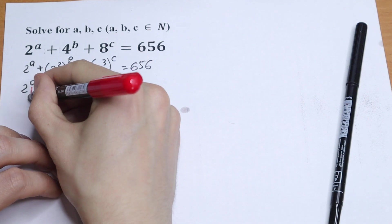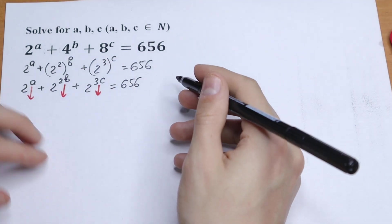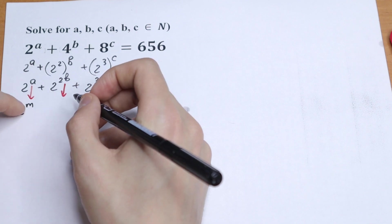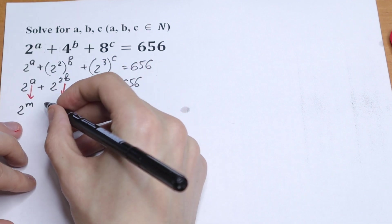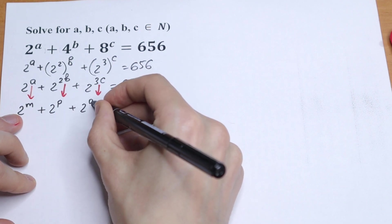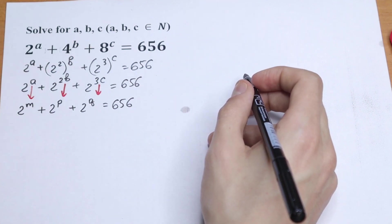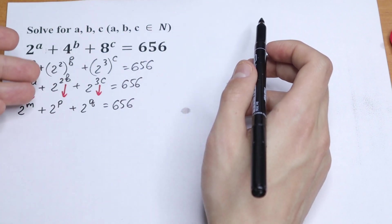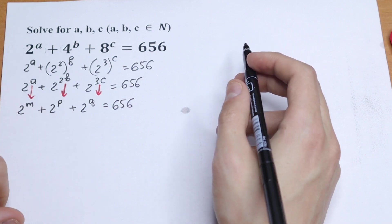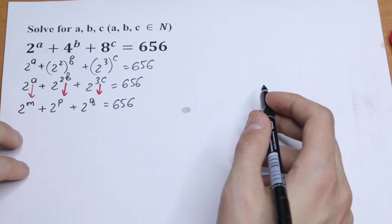Let's use a substitution. Let's say the powers are m, p, and q — so 2 to the power m, plus 2 to the power p, plus 2 to the power q, equal to 656. We need the answer in integers, so we'll see if there are zero, one, or more integer answers. Now let's factor out 2 to the power m from this expression.